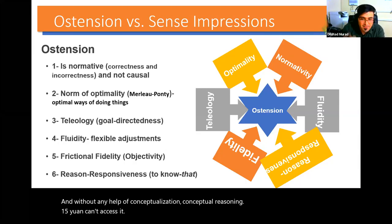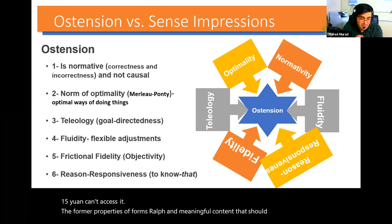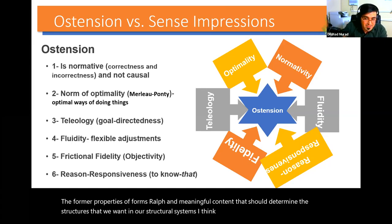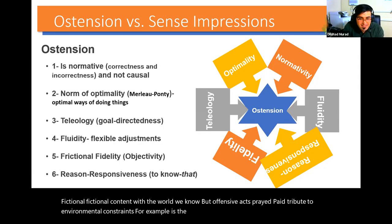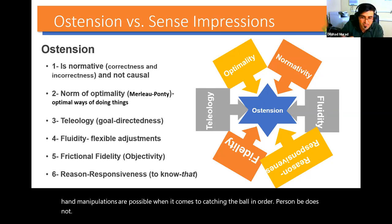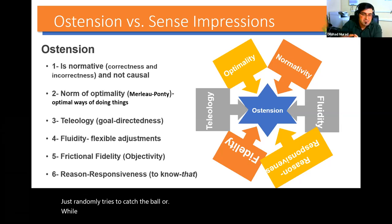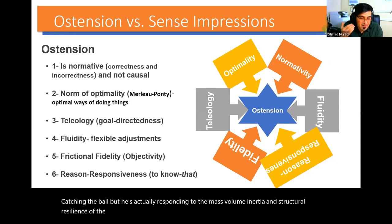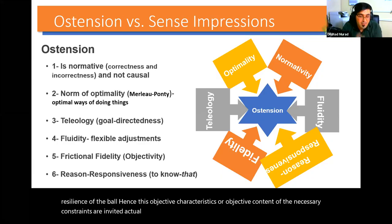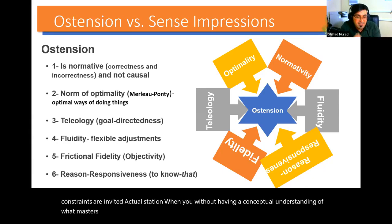Fifth, when Carnap says it is the form of properties rather than meaning or content that should determine the structures we want in our structural systems, I think he risks losing objectivity or friction with the world. But ostensive acts pay tribute to environmental constraints. For example, it is the shape of the ball that determines what kind of hand manipulations are possible when catching the ball. Person B does not randomly try to catch the ball; he is actually responding to the mass, volume, inertia, and structural resilience of the ball. Hence these objective characteristics necessarily constrain ostensive acts — without having a conceptual understanding of what mass, volume, inertia, or structural resilience is.